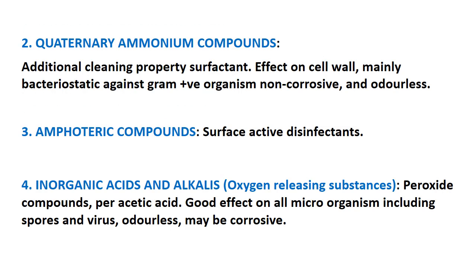Halogen-based formulations are effective against a wide range of bacteria and penetrate the cell wall, but have a corroding effect on equipment and even the hands of operators. The second category is quaternary ammonium compounds, which have additional cleaning properties as surfactants, act mainly on cell walls, are bacteriostatic against gram-positive organisms, non-corrosive and odorless. Amphoteric compounds can be either acidic or alkaline depending on the solution and have surface-active disinfectant properties. Inorganic acids and alkalis include oxygen-releasing substances such as peroxide compounds and peracetic acid, which have good effect on all microorganisms including spores and viruses.